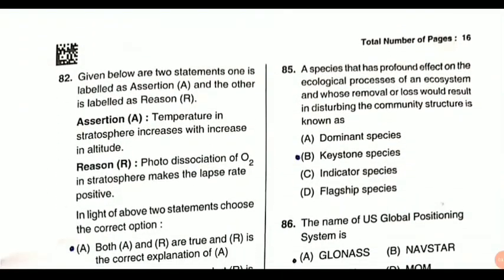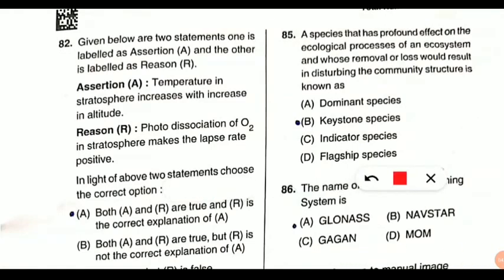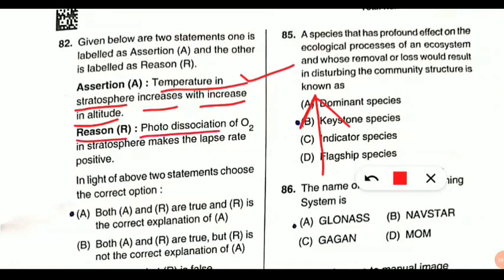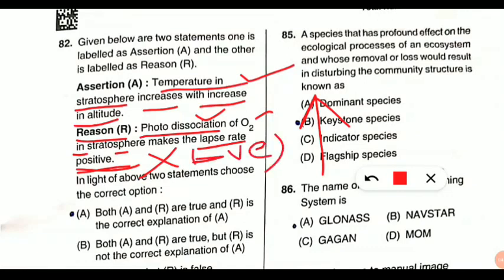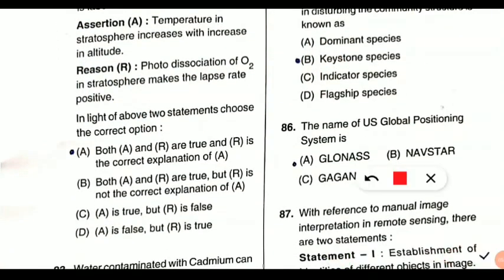Question 82 is an assertion and reasoning question. The assertion states: temperature in the stratosphere increases with increase in altitude — this is absolutely correct. The reason states: photo dissociation of oxygen in the stratosphere makes the lapse rate positive. However, this is wrong — due to photo dissociation of oxygen, the lapse rate becomes negative. A negative lapse rate increases the temperature, which is why temperature increases as altitude increases in the stratosphere. So assertion is true but the reason is false — option C is correct.